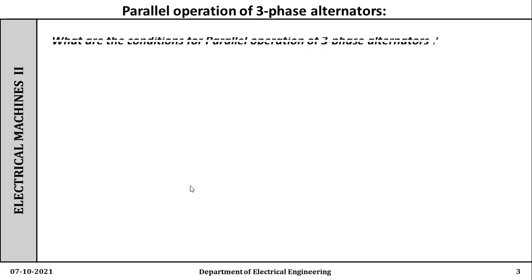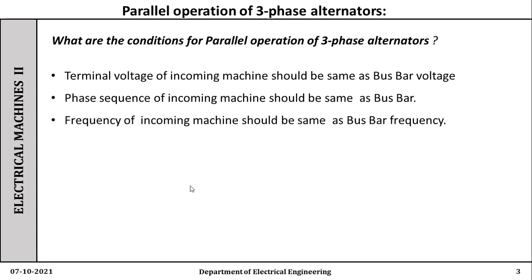What are the conditions for a successful parallel operation of the alternators? The first condition is the terminal voltage of the incoming machine — the machine which is to be connected in parallel to the earlier machines already running in the power system — should be the same as that of the bus bar voltage. The phase sequence of the incoming machine should be the same as that of the bus bar, and the frequency of the incoming machine should be the same as that of the bus bar frequency.